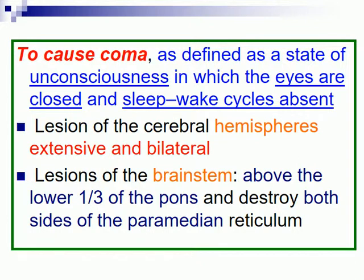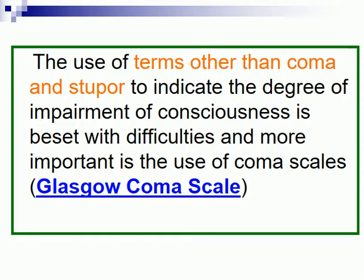Coma is defined as a state of unconsciousness in which the eyes are closed and sleep-wake cycles are absent. It results from lesions of the cerebral hemispheres that are extensive and bilateral, or lesions of the brainstem above the lower third of the pons, destroying both sides of the paramedian reticular formation. The use of terms other than coma and stupor to indicate degrees of impairment of consciousness is beset with difficulty, making the use of a coma scale more important.